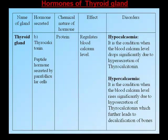Thyrocalcitonin is a peptide hormone secreted by parafollicular cells; it is protein in nature and regulates blood calcium levels. It stimulates bones to take up calcium from the blood for deposition of calcium phosphates, thereby decreasing blood calcium levels. Its secretion is regulated by a feedback mechanism: increased blood calcium stimulates C cells to secrete thyrocalcitonin, and vice versa. Disorders: hypocalcemia (significantly low blood calcium) results from hypersecretion of thyrocalcitonin; hypercalcemia (significantly high blood calcium) results from hyposecretion, which further leads to decalcification of bones.